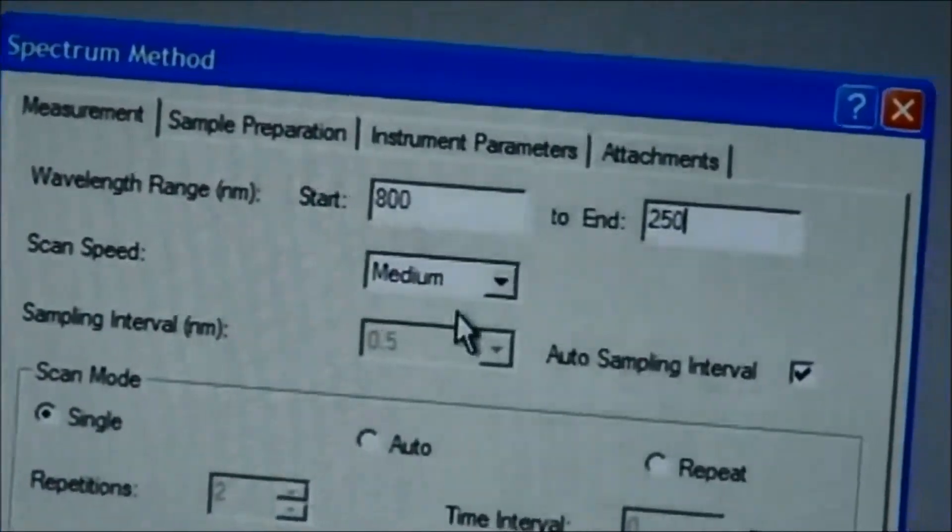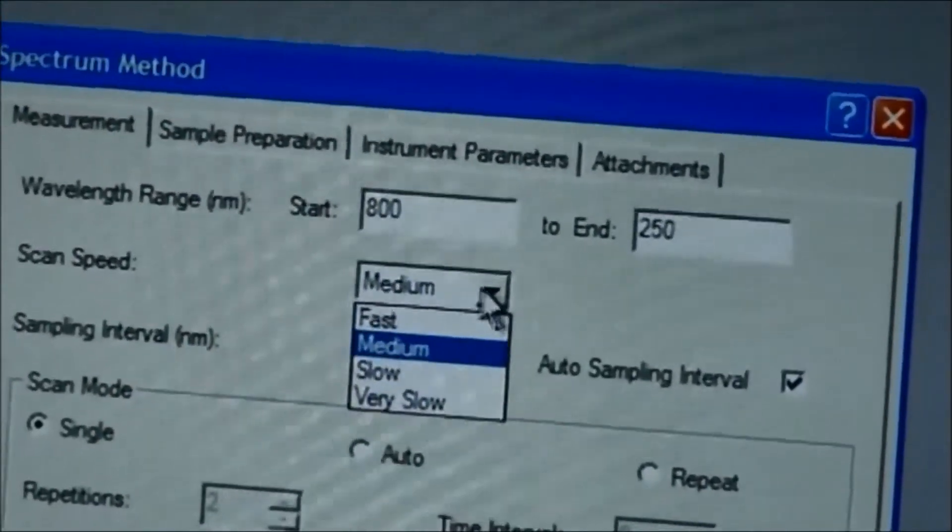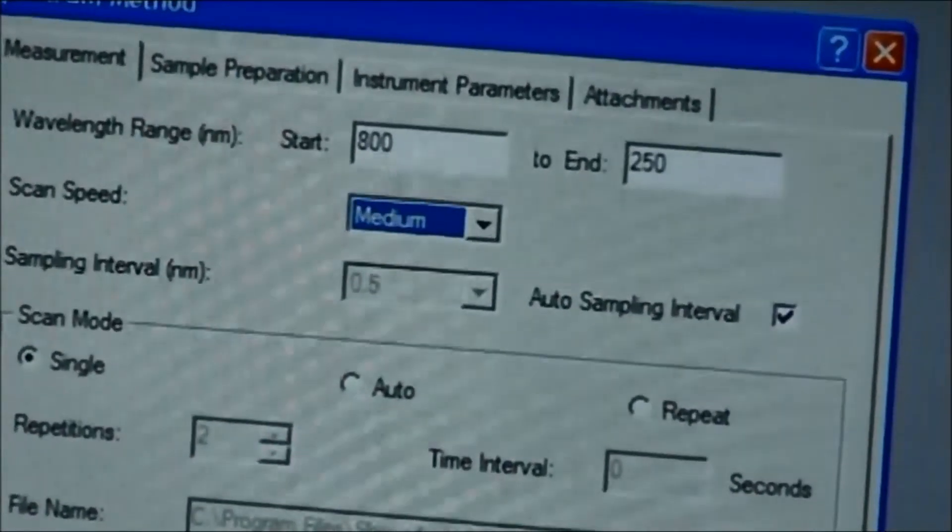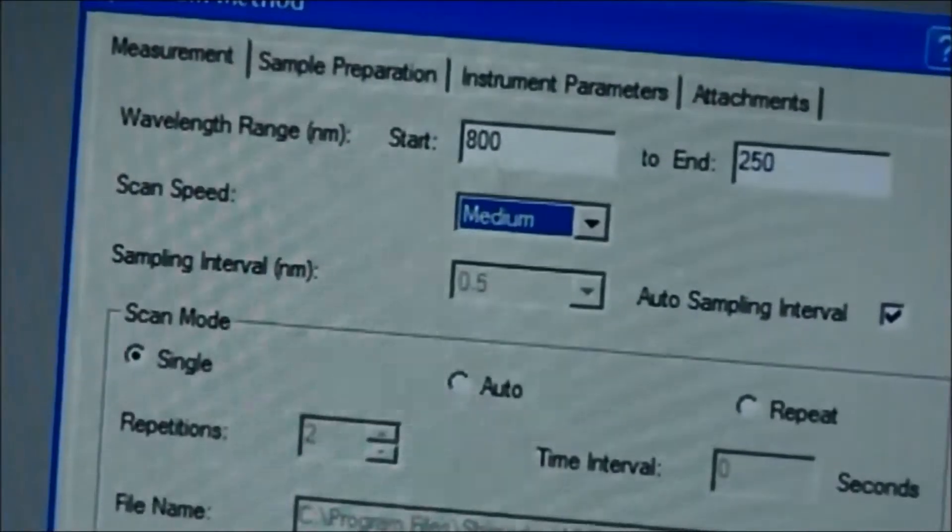You go to the scan speed. We have fast, medium, slow, and very slow, but in this case, best use that of the medium. And then you want the scan mode to be single. Then you can click your OK.